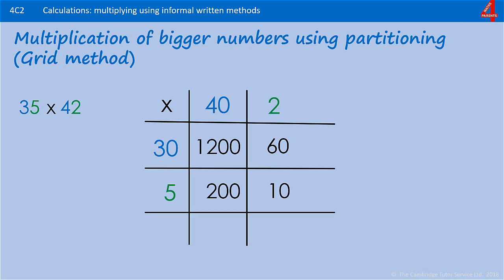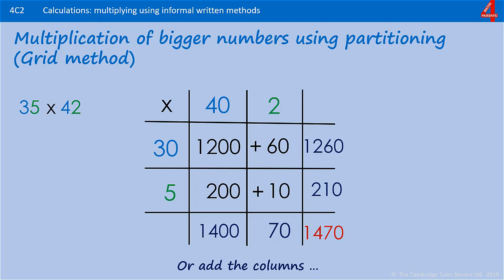Now there are two ways you can do this. You can add the rows. 1200 add 60, which is 1260. And 200 add 10, which is 210. And then we'd add those columns together. Or, if you prefer, you can add the columns first. 1200 add 200 is 1400. 60 add 10 is 70. And then you add either the columns together or the rows together, that I've indicated here in blue. So if you're adding the columns together, you're adding 1260 and 210. If you're adding the rows together, you're adding 1400 add 70. Whichever ones you add, your answer will be 1470.